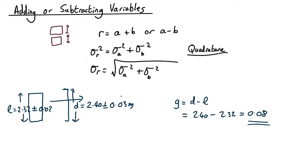So we can use the quadrature equation. The standard deviation of the gap squared equals the standard deviation in d squared. So the uncertainty in d is 0.03 plus. Remember it's plus even though there's a minus sign here. It's always a plus whether you add or subtract 0.02 squared.